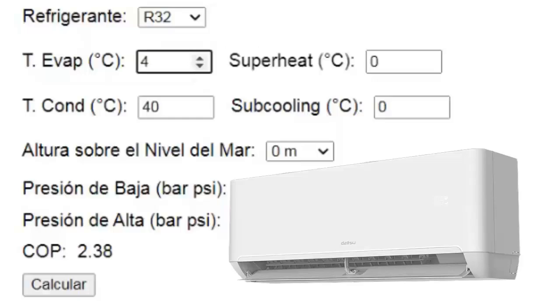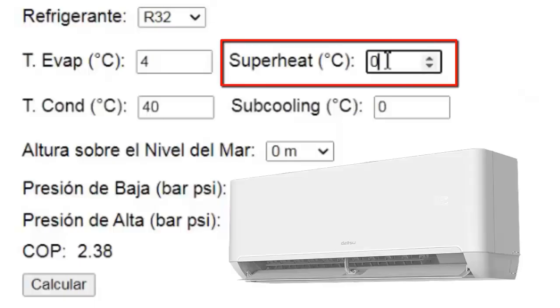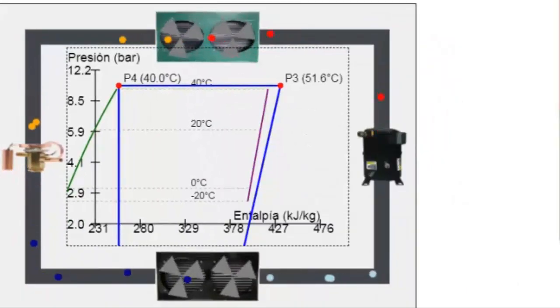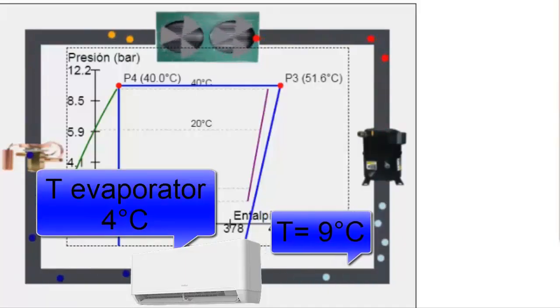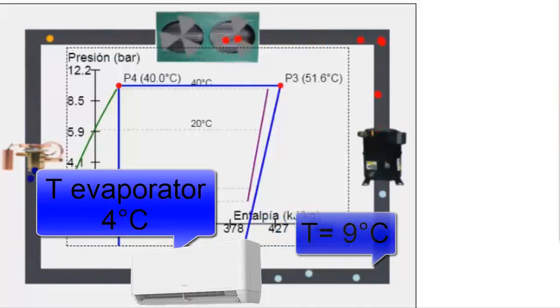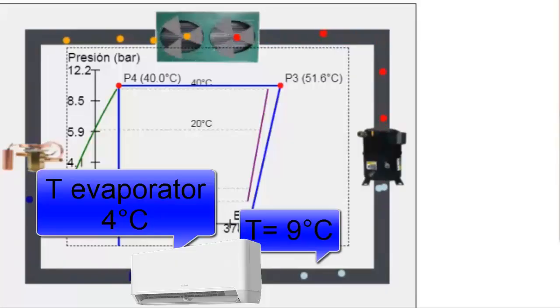For a more precise calculation, we will set the superheat adjustment to 5 degrees Celsius at the evaporator outlet. Let's remember that superheat is the increase in temperature of the refrigerant gas inside the evaporator coil, located in the indoor unit.